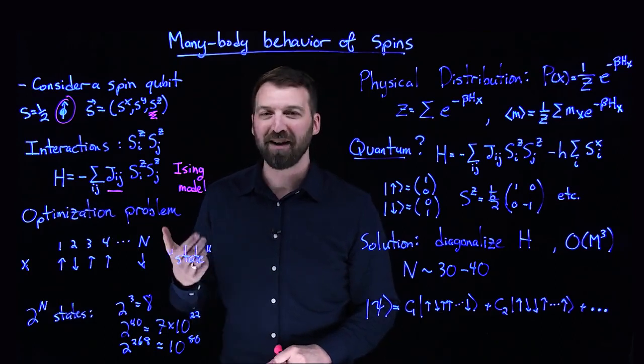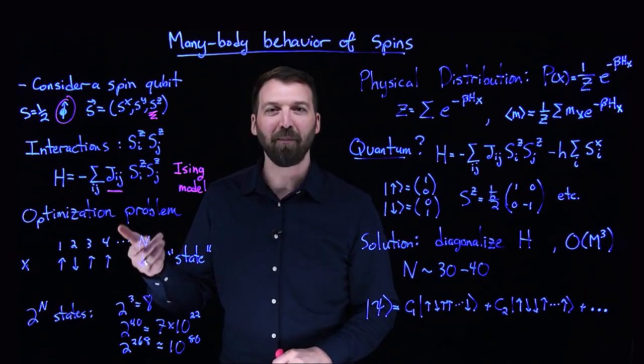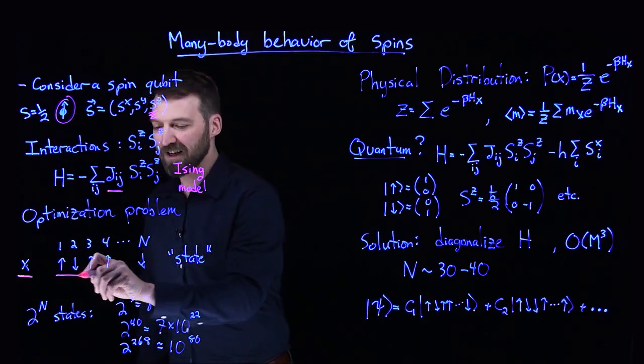One way you can imagine doing that optimization procedure would be to look through all possible spin configurations. Let me call the spin configuration X. Here's an example.